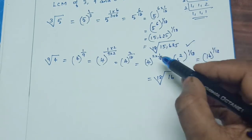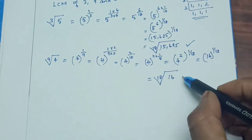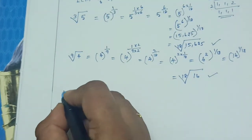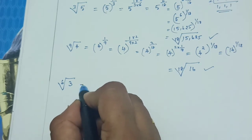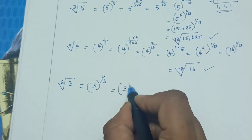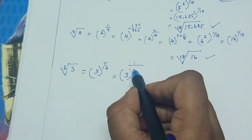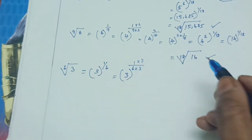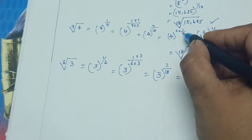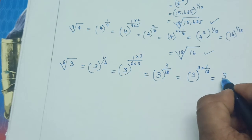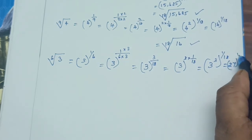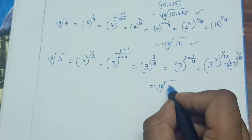So 9th root of 4 becomes the 18th root of 16. Now take the third surd: 6th root of 3. In fractional index form: 3 to the power 1 by 6. The LCM is 18, so multiply by 3: 1 into 3 by 6 into 3 gives 3 by 18. So 3 to the power 3 by 18 becomes 3 cubed, the whole raised to 1 by 18. Since 3 cubed is 27, it becomes the 18th root of 27.